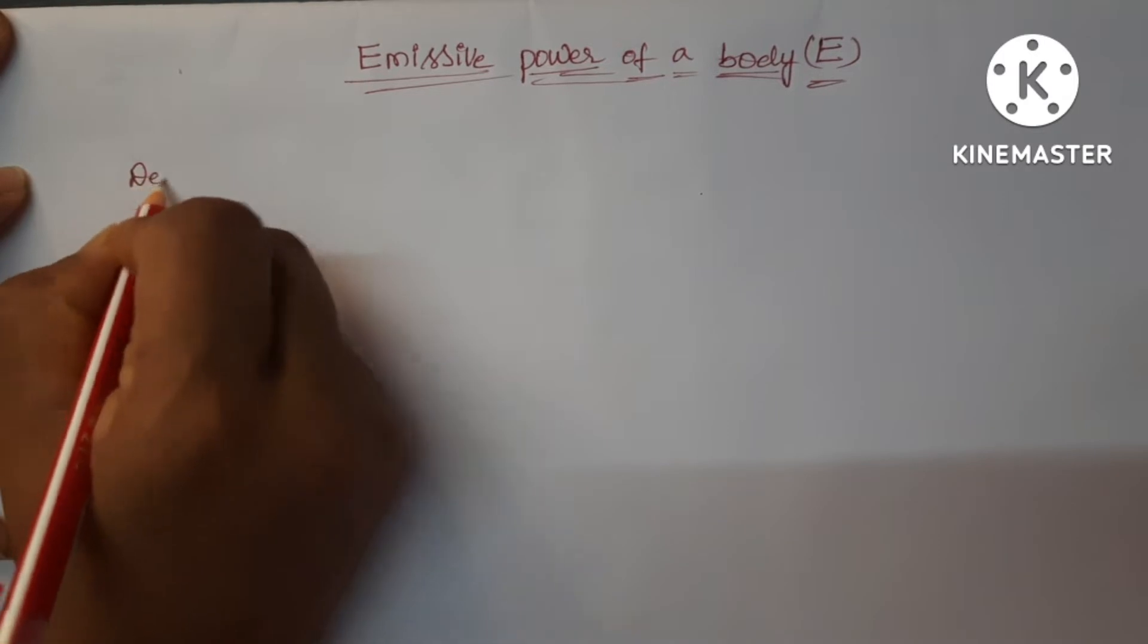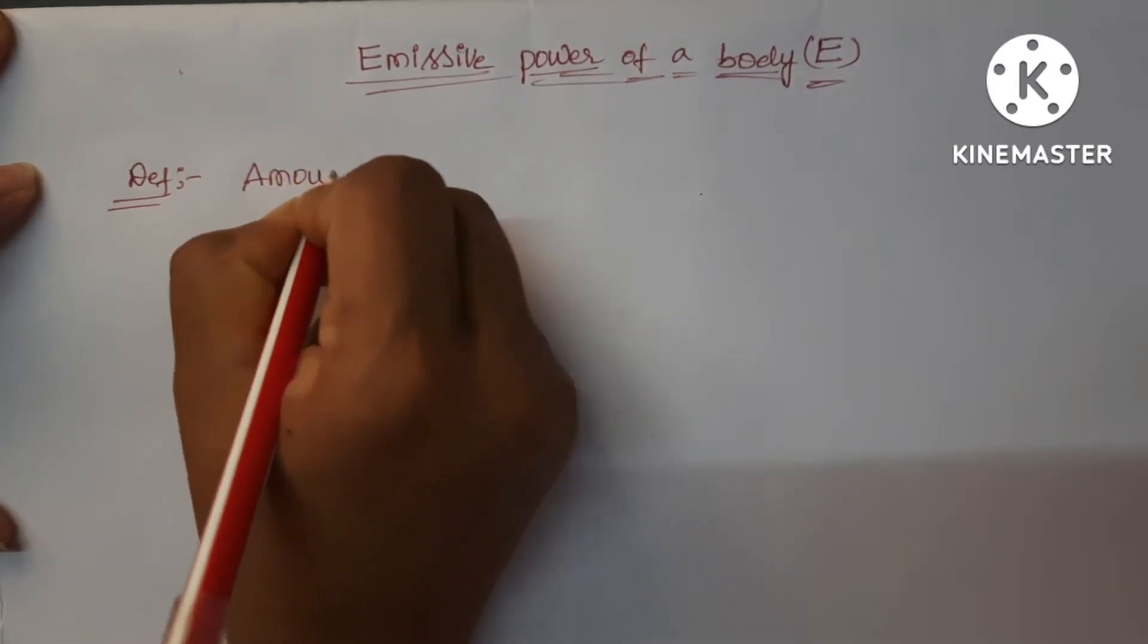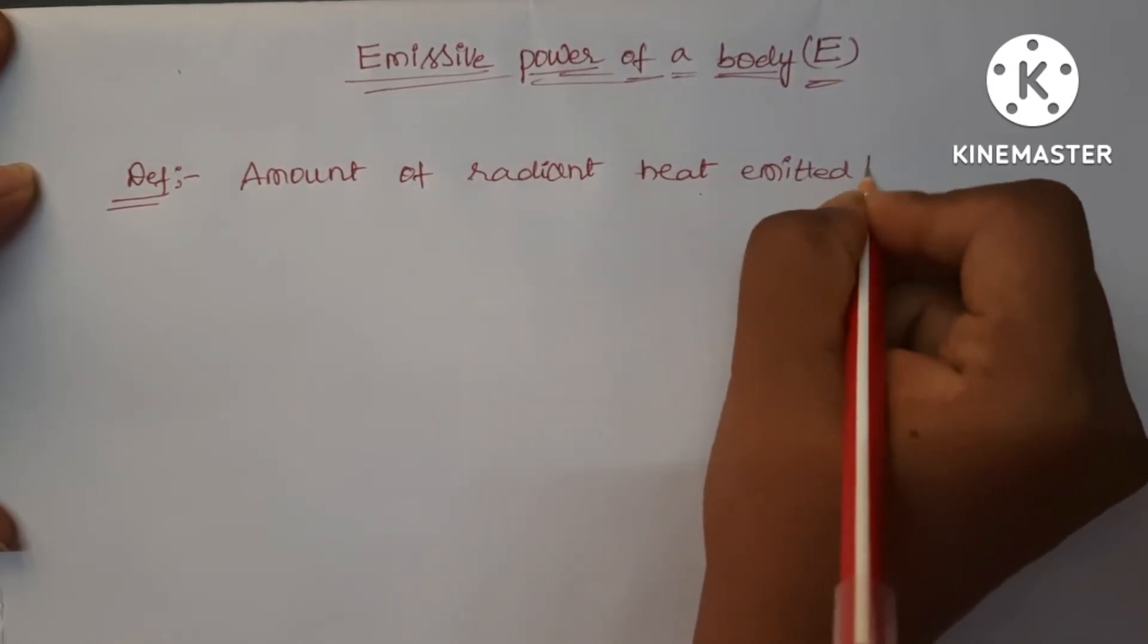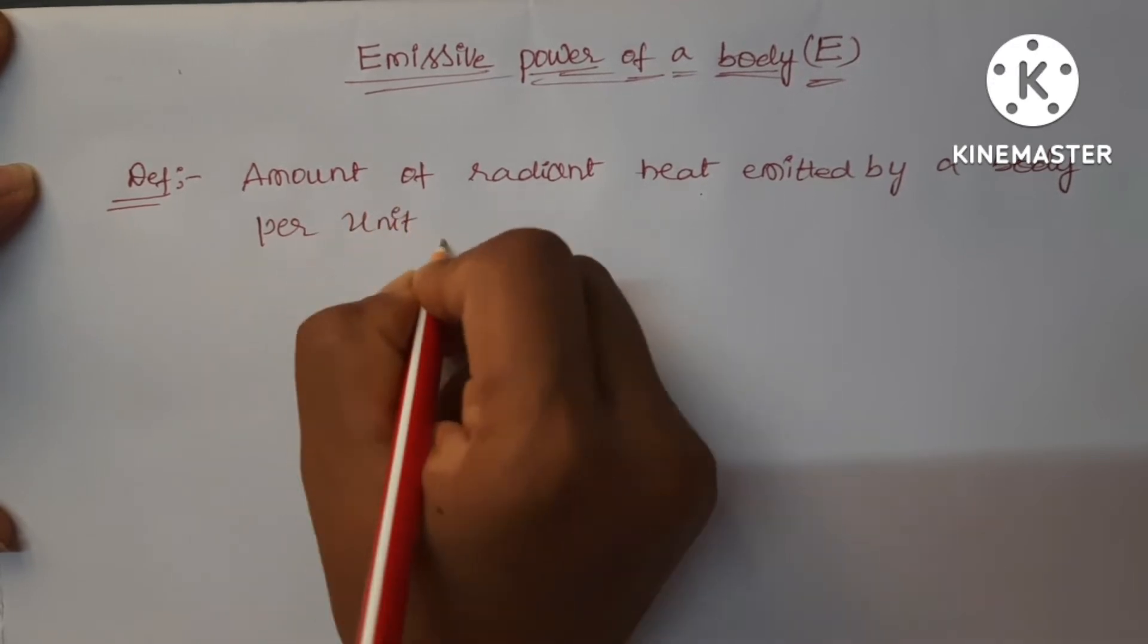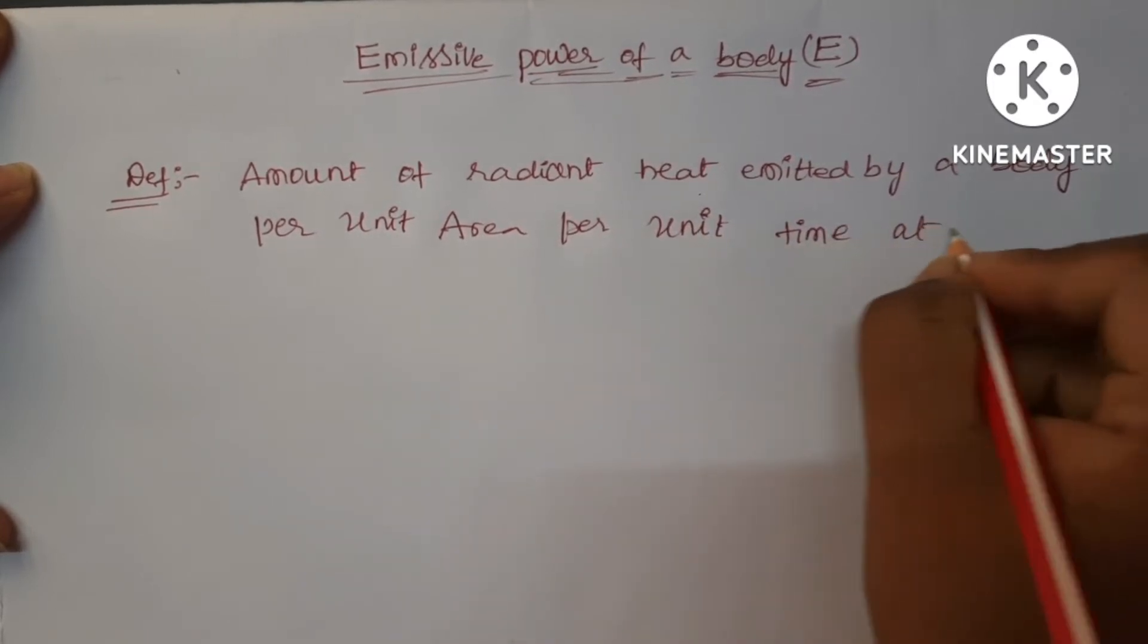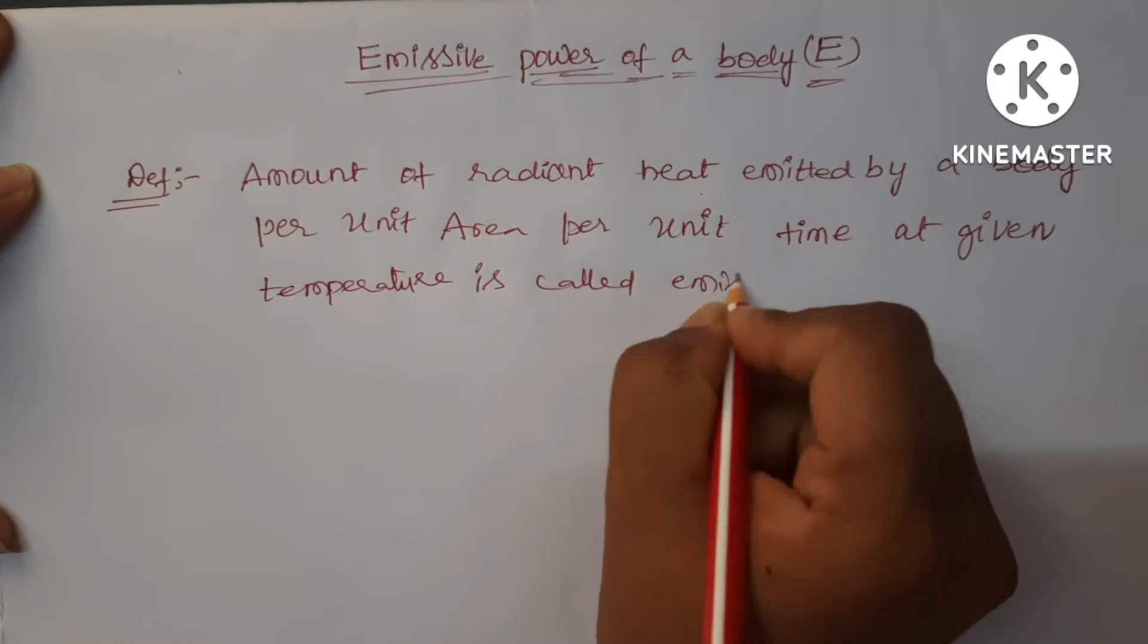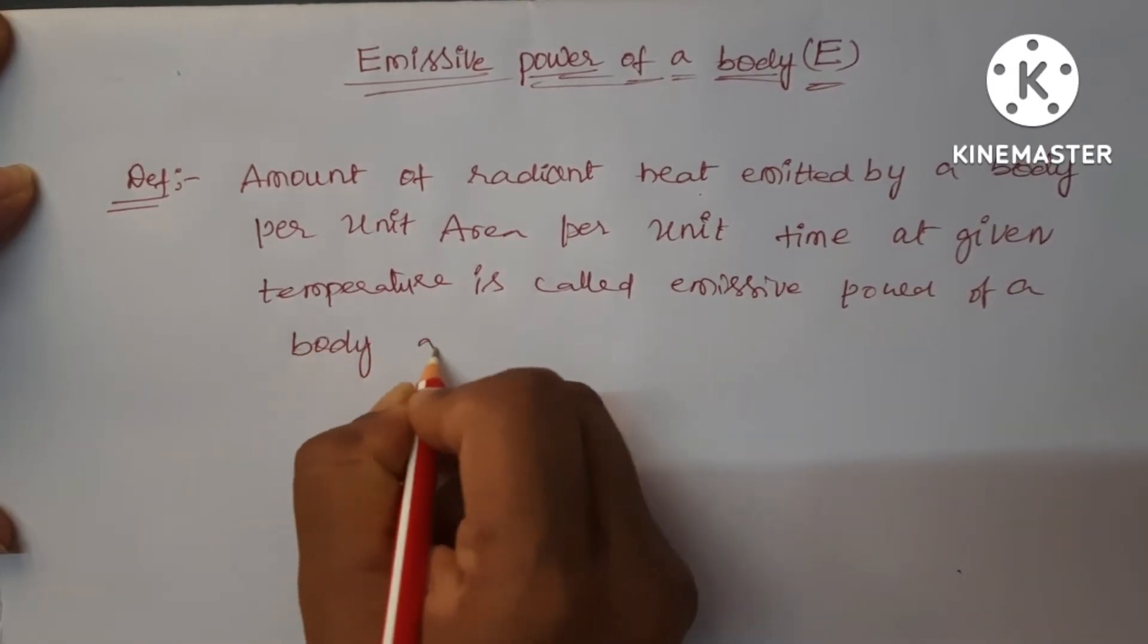Let us see the definition. Definition of emissive power is amount of radiant heat emitted by a body per unit area per unit time at a given temperature. This is called emissive power of a body at that time.